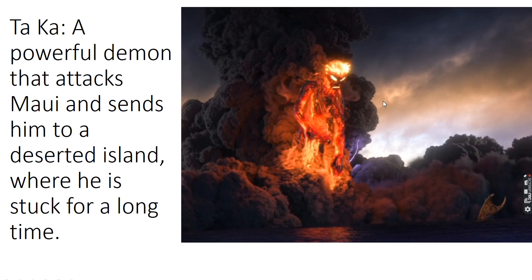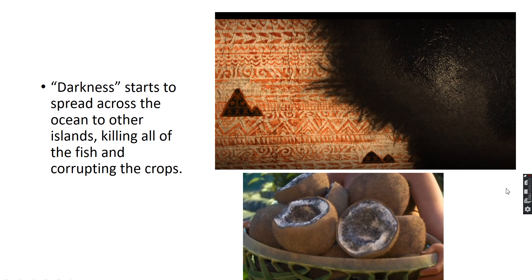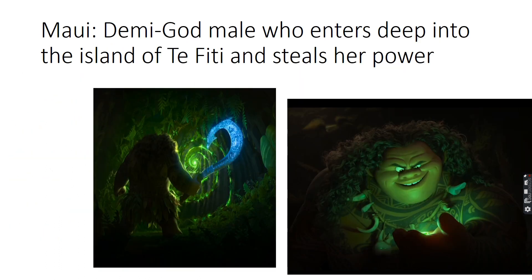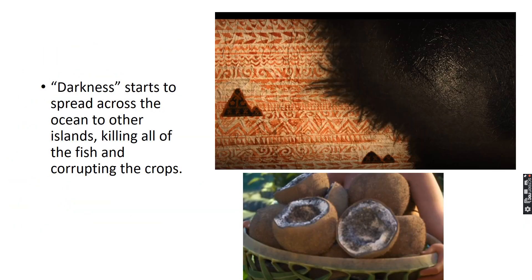So after Maui steals the heart and leaves, he's confronted by Taka, which is described as this powerful demon. Taka attacks Maui, defeats him, and sends him to a deserted island way out deep in the ocean, where he's stuck forever. After Maui's gone, this darkness in the world is created and it just starts to spread to all these other islands. When it reaches people's islands, it essentially kills off all the fish and corrupts their fruits and their crops. So Moana — she's an island princess who feels as if she's being called to go find Maui, take the heart back to Te Fiti, and restore it. The idea is that if they can get back this green jewel that Maui stole, the darkness will go away.